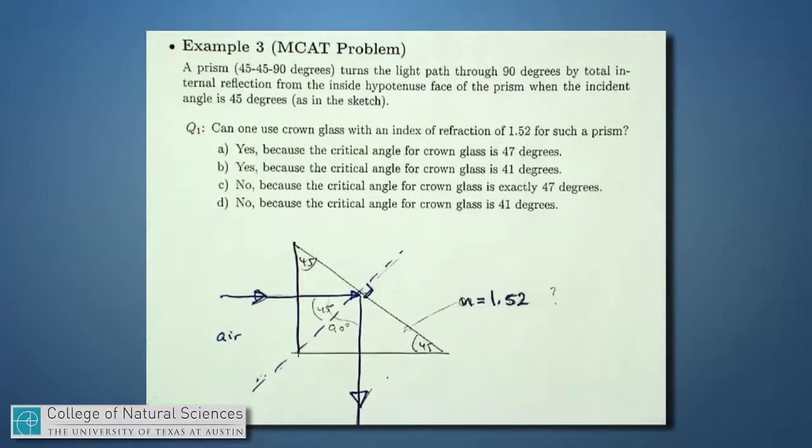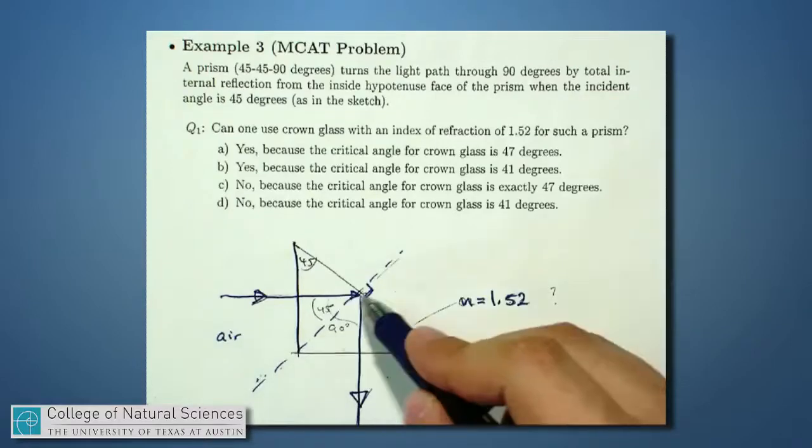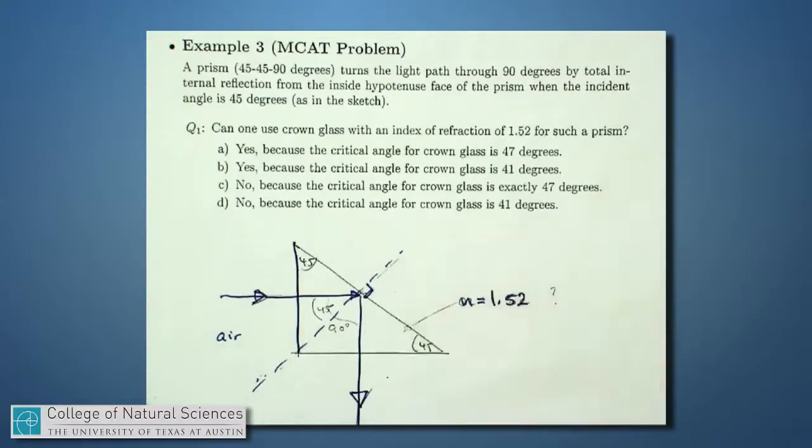But as we know, if the light comes in at too large of an angle, it does not get out at all. In fact, it totally internally reflects. So we have to calculate that effect. How big of an angle is it that the light would totally internally reflect? And none of it would get out this way. In fact, all of it would reflect back down.